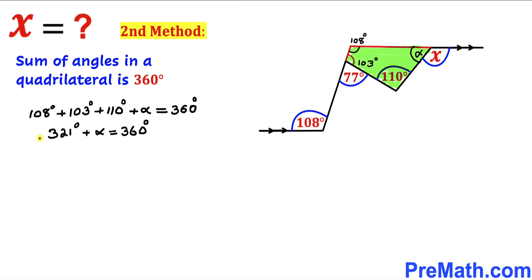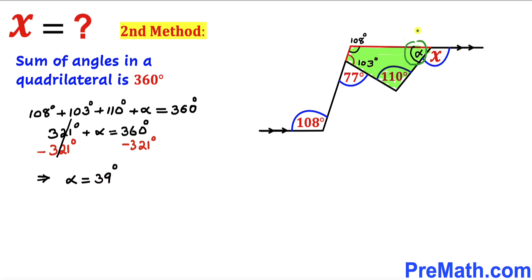Let's go ahead and subtract 321 degrees from both sides to isolate angle alpha. The 321 degrees and negative 321 degrees cancel, so our angle alpha turns out to be 39 degrees.